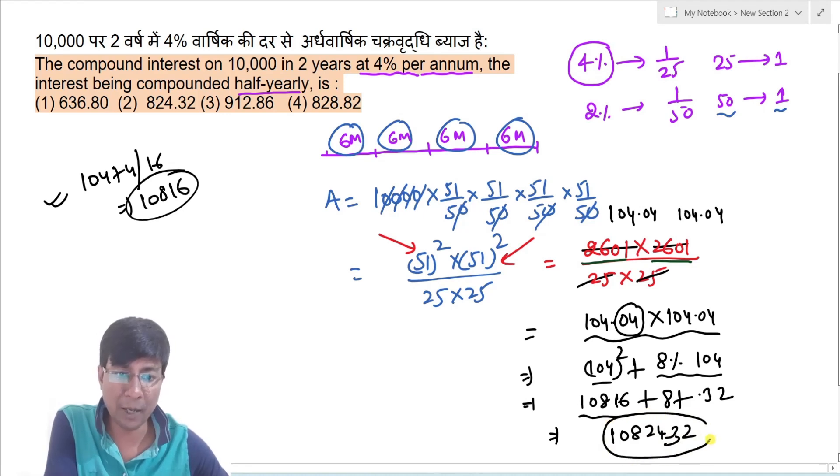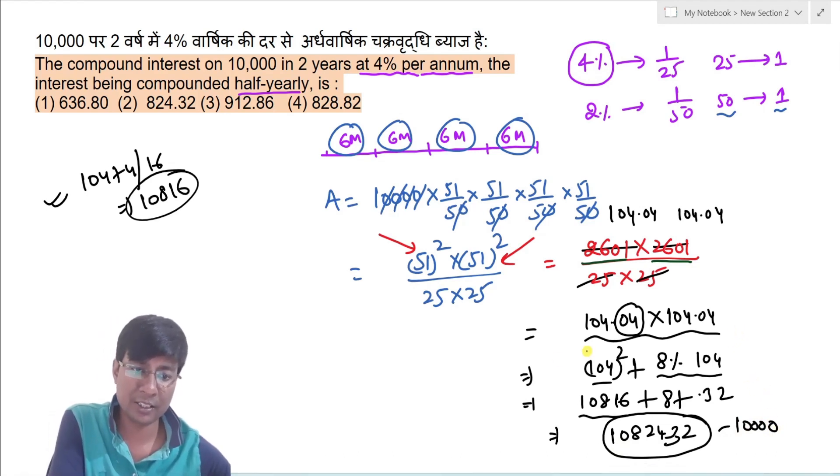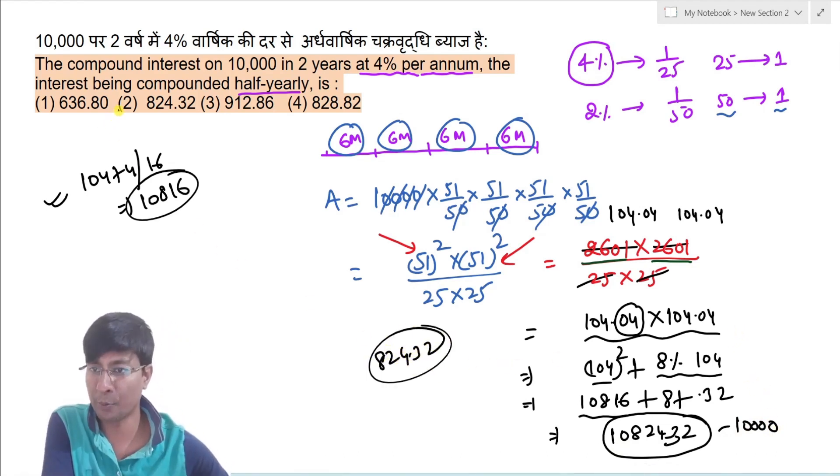Toh interest kitna milega, minus 10,000 karoge. Toh ye value kitna hoga, simply 824.32, that implies option number 2.